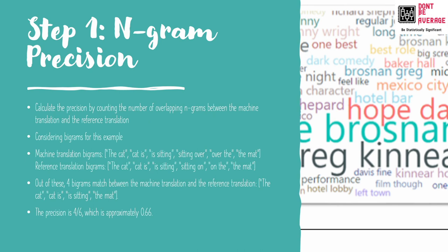We calculate the precision by counting the number of overlapping n-grams — n-grams means sequences of words — between the machine translation and the reference translation. Let's consider bigrams for this example. Bigrams means n equals two, which means we consider only two consecutive words. So the machine translation bigrams would be: 'the cat,' 'cat is,' 'is sitting,' 'sitting over.'